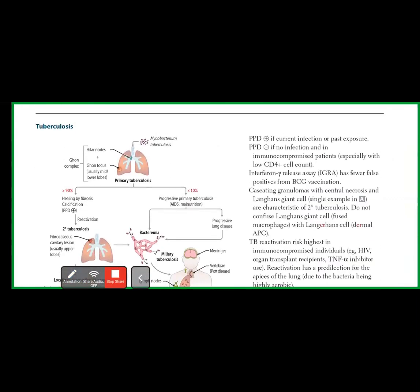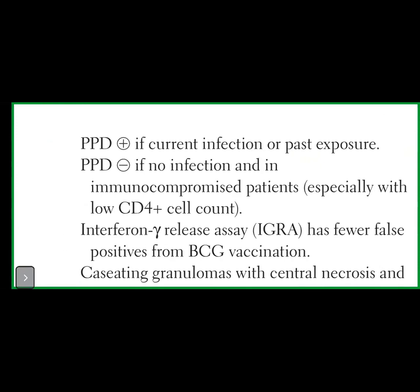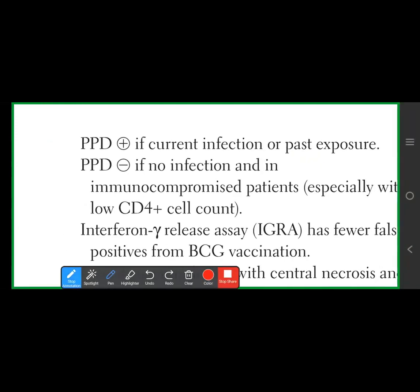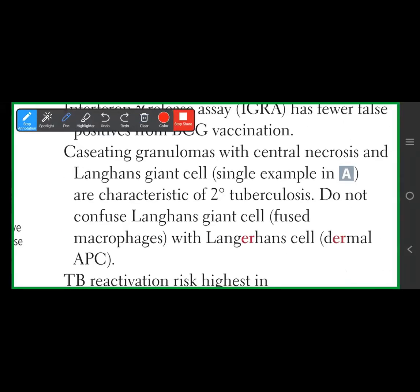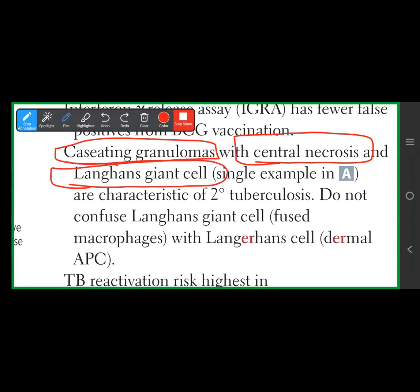PPD test: positive means current infection or past exposure. Negative means no infection, or seen in sarcoidosis or HIV with low CD4 count. Classical histology of TB: caseating granulomas (non-caseating = sarcoidosis), central necrosis with Langhans giant cells.